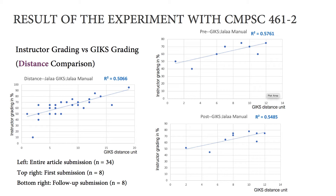And again, a similar result. 74% correlation is received for the last of the multiple submissions. Although the correlations for the distance comparison are not as high as those of the link comparison, the correlations are over 70%.